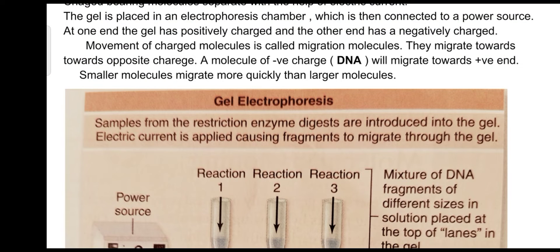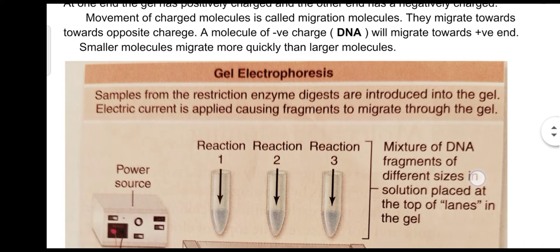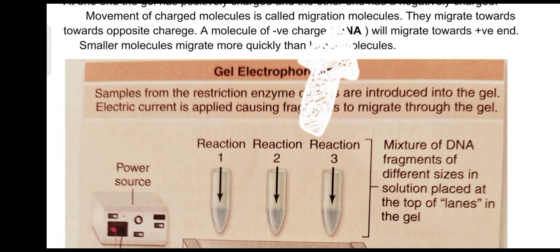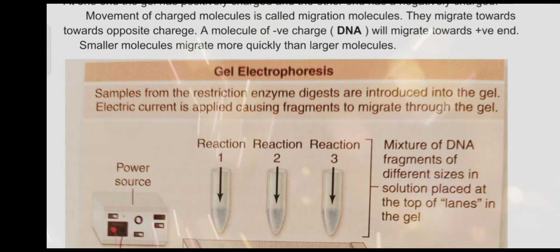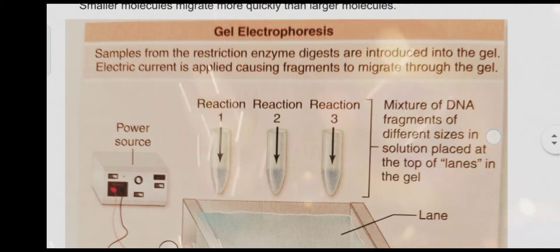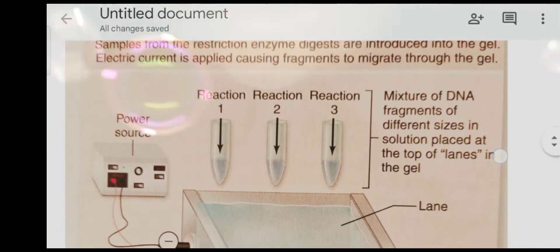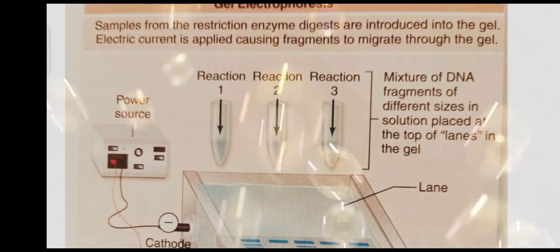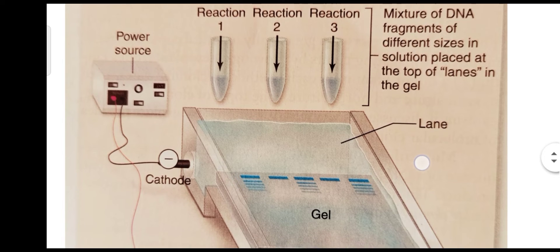Gel electrophoresis chamber کے اندر رکھنے کے بعد charged molecules کی migration ہوگی۔ Molecules migrate towards the opposite charge — جس molecule پر negative charge ہے جیسے DNA، وہ positive کی طرف move کرے گا۔ Smaller molecules quickly move کرتے ہیں larger molecules کے مقابلے میں۔